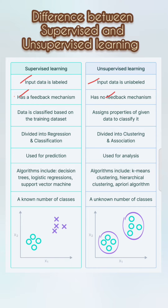Point three: in supervised learning, data is classified based on the training dataset, whereas in unsupervised learning, properties of the given data are assigned to classify it. Point four: supervised learning is divided into regression and classification, whereas unsupervised learning is divided into clustering and association.